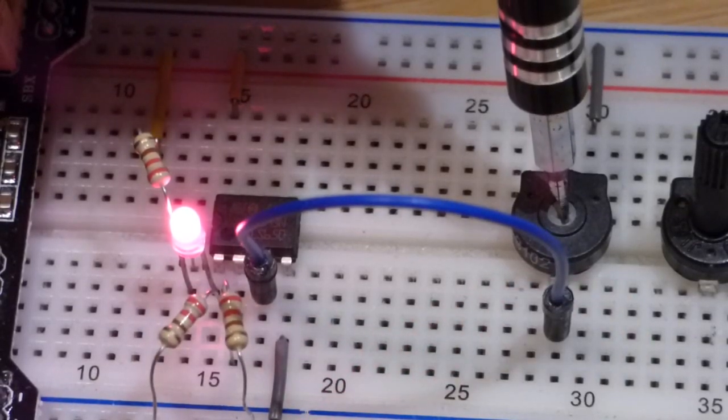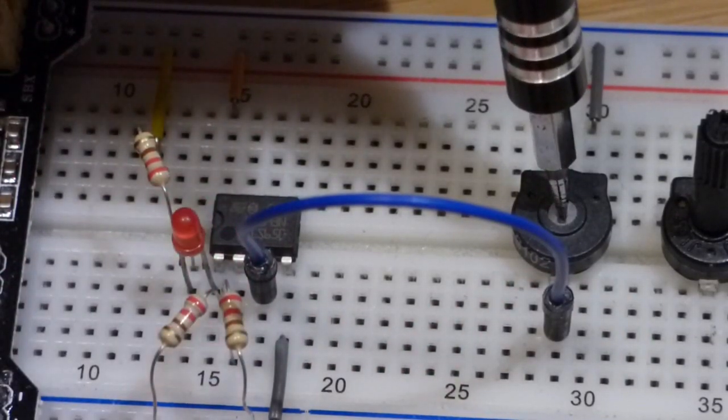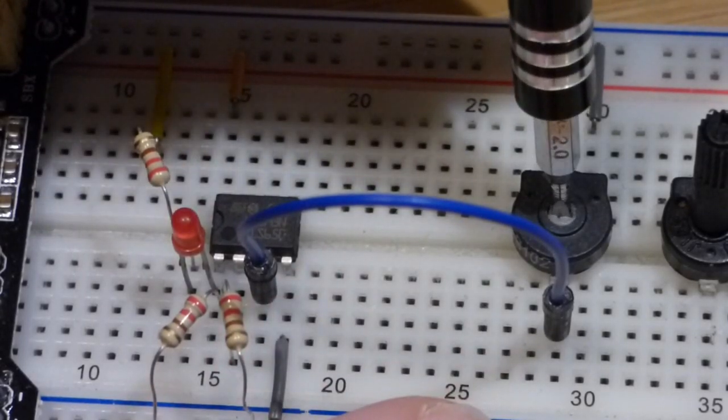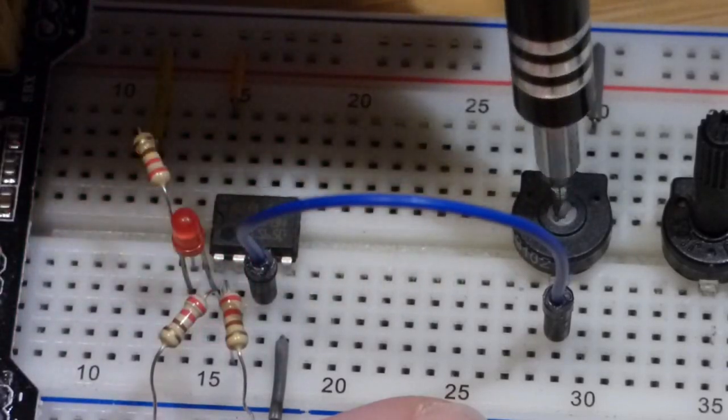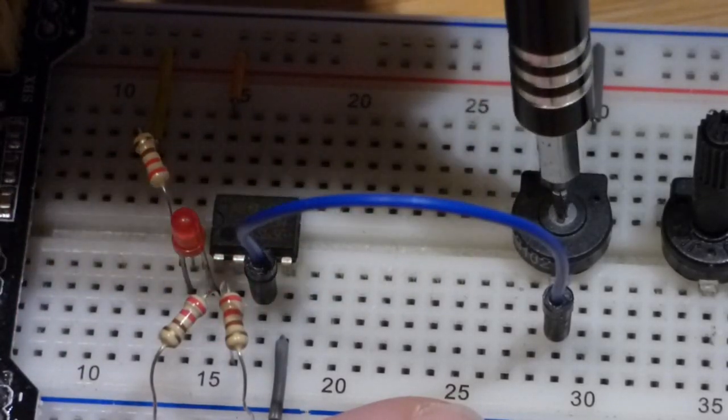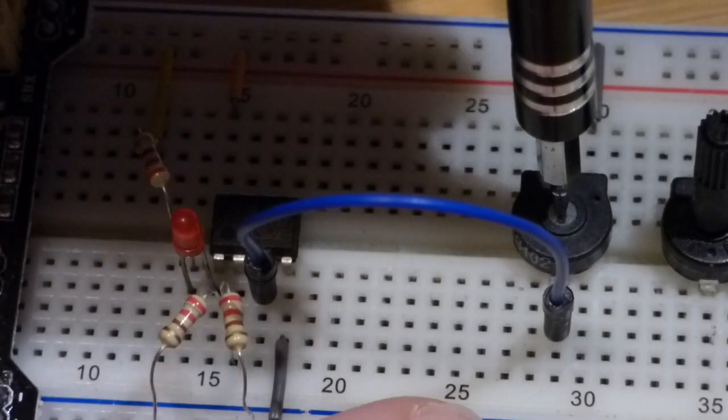When I turn the trim pot a certain distance, the LED turns on. When I turn it a certain distance the other way, it turns off. It's a certain point where it either turns on or off. Anything else, it just holds in that position.